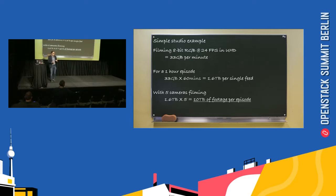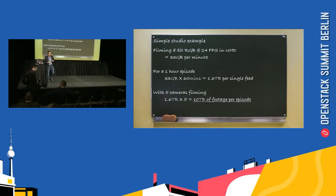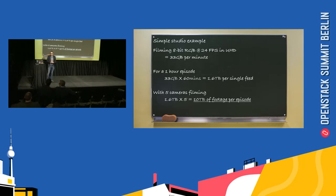That doesn't even take into account the extra data we're generating on top of that — for example, if we're localizing into different languages or doing audio captioning, we're generating more and more data and need storage capable of managing that. Typically what people have is a mixture of storage, maybe some file storage and also some object storage like OpenStack Swift. They might have file or block storage because it's very fast — they can write and read quickly — but it can't scale. It can't handle the sheer volumes of data we need to store, so they're looking towards object storage.